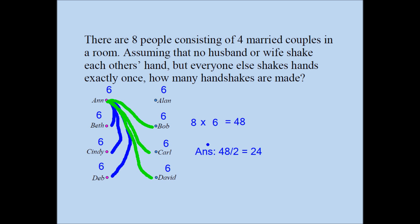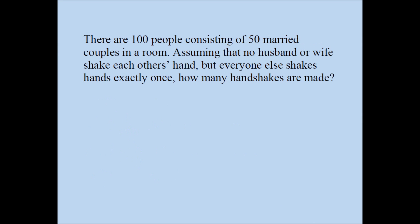Now we'll use the same concept to solve the original problem. I have 100 people, and each person will shake hands with 98 remaining people. Where does 98 come from? 100 minus 2 — you don't shake hands with yourself and you don't shake hands with your spouse. So each person claims 98 handshakes and there are 100 people, giving us 100 times 98, which equals 9800.